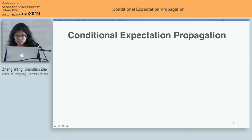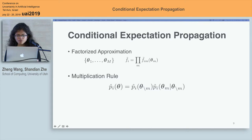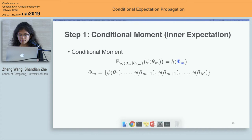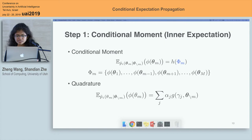So we wonder if we can address the intractable moments by incorporating conditional moments. In order to utilize the conditional moments, we first partition the random variables into m groups and factorize each factor over these groups. Then, according to the multiplication rule of probability, the tilde distribution can be represented as the product of marginal distribution and conditional distribution. Theta 0m represents the random variables excluding theta m, and the moment calculation can be represented in the form of nested expectations. The inner expectation — the conditional moment — can also be treated as a function of phi m, where phi m stands for all the sufficient statistics excluding phi theta m. Usually, the conditional moment can have an analytical form. Even if it is intractable, we can use a fully factorized approximation and quadrature formulas to do the computation, where alpha j is the node weight and function g is the node value.